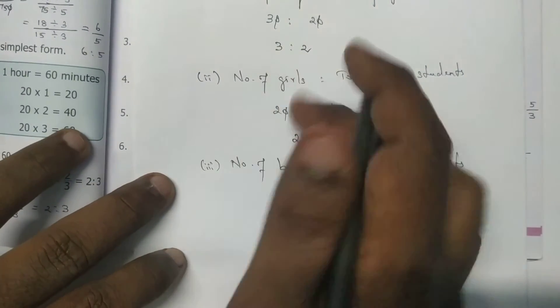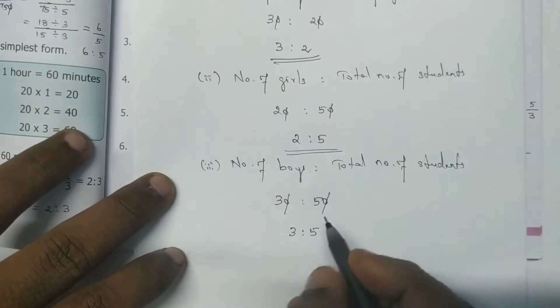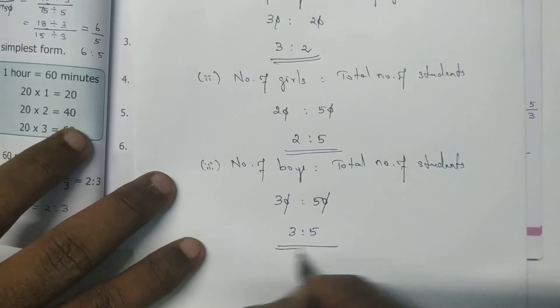So first one is 3 is to 2. Second, 2 is to 5. Third one is 3 is to 5.